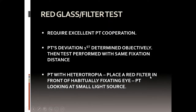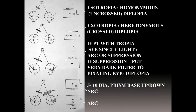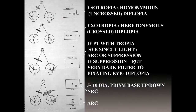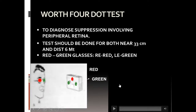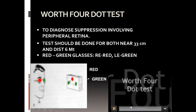In the red glass test, you put a red filter in front of one fixating eye and the patient looks at a small light source. You ask the patient whether there is crossed or uncrossed diplopia. Esotropia gives uncrossed diplopia; exotropia gives crossed diplopia. If a patient with tropia sees a single light, it means either there is ARC or there is suppression.